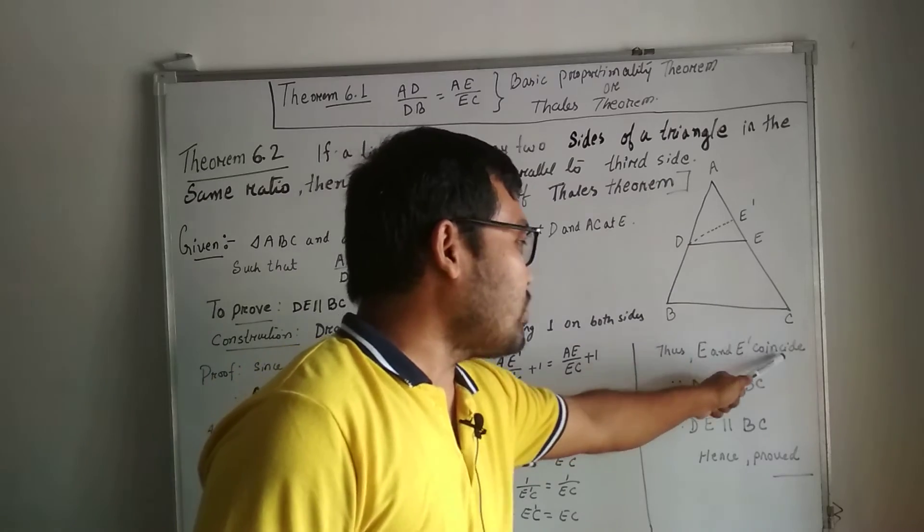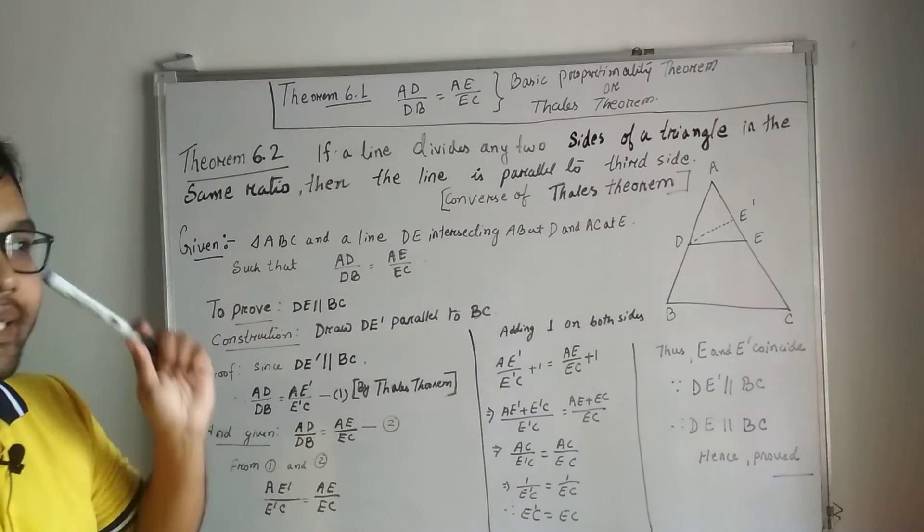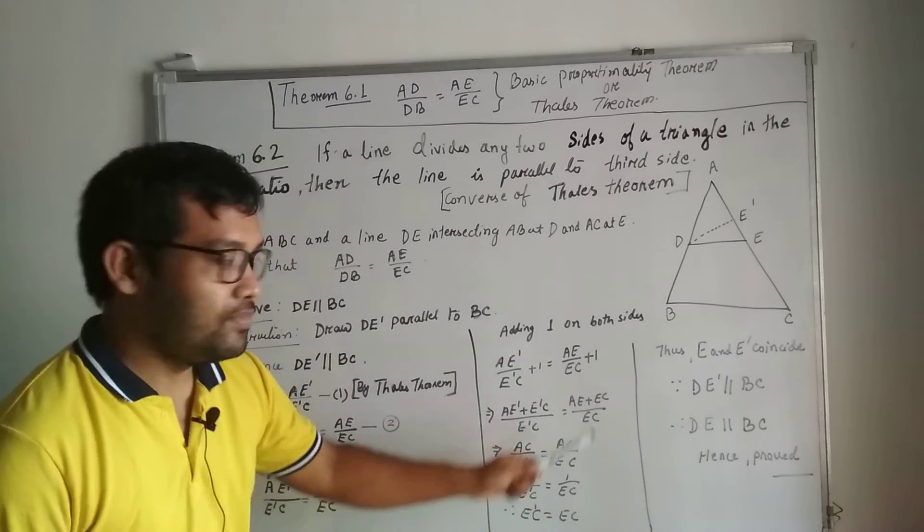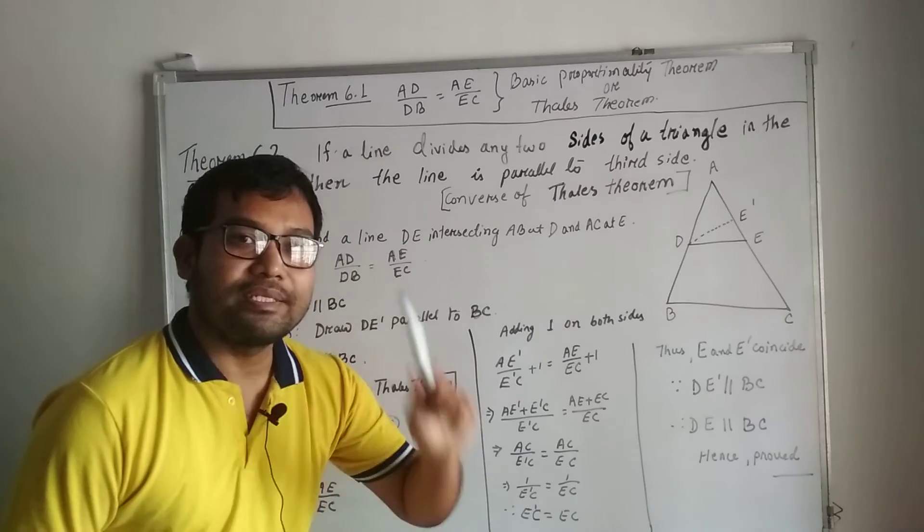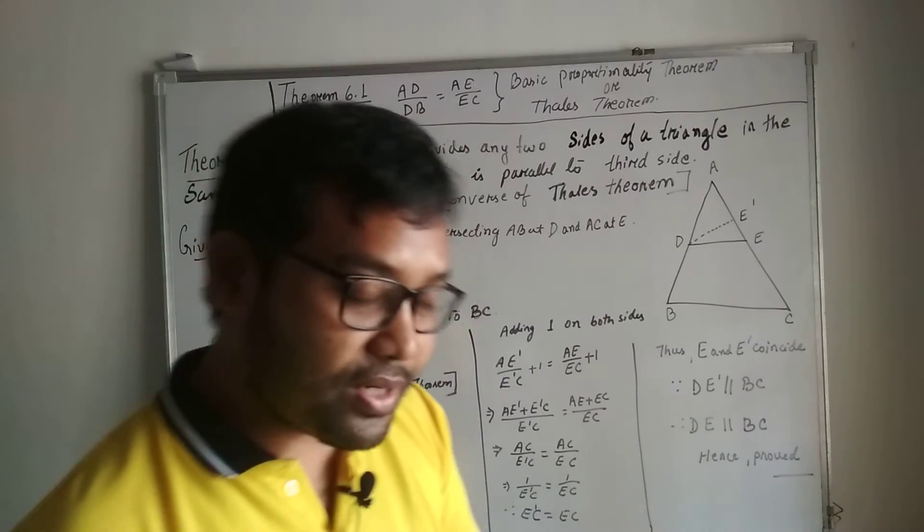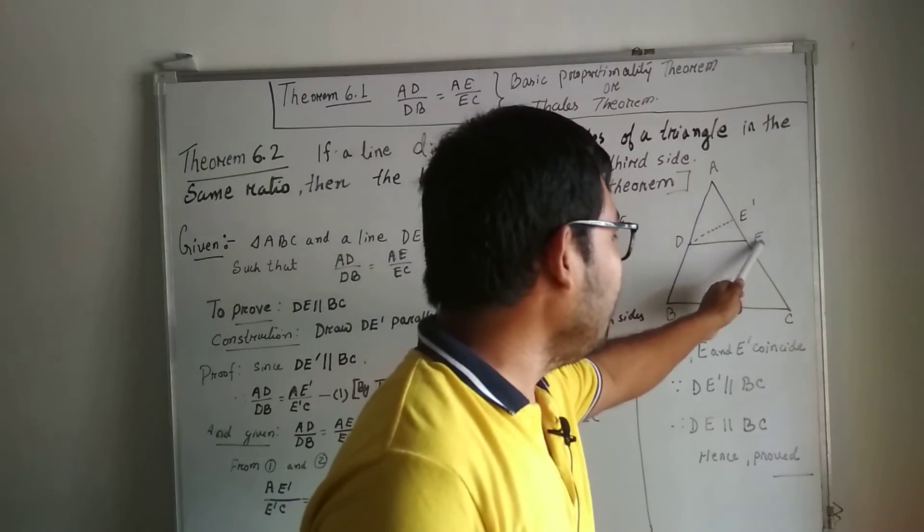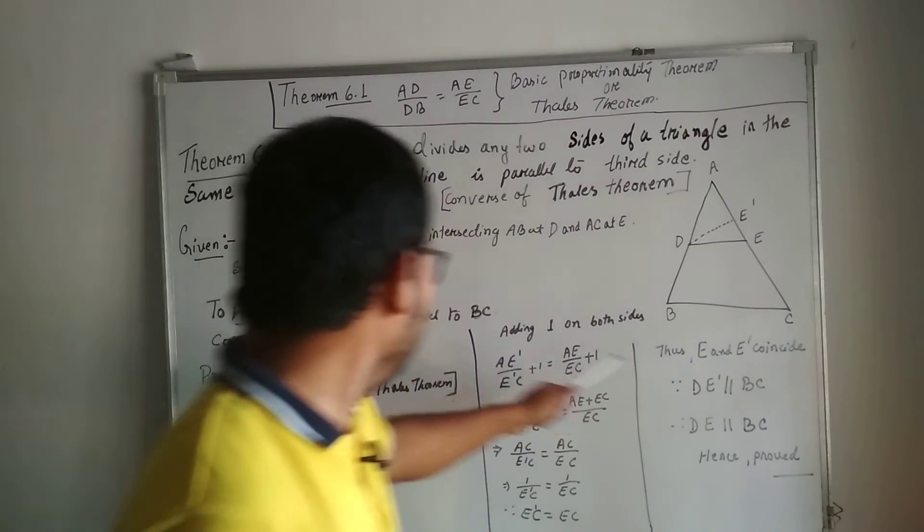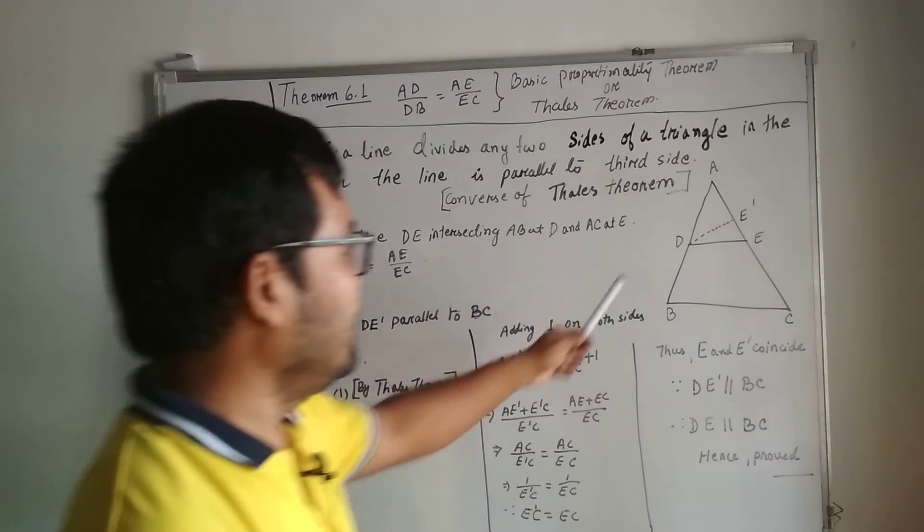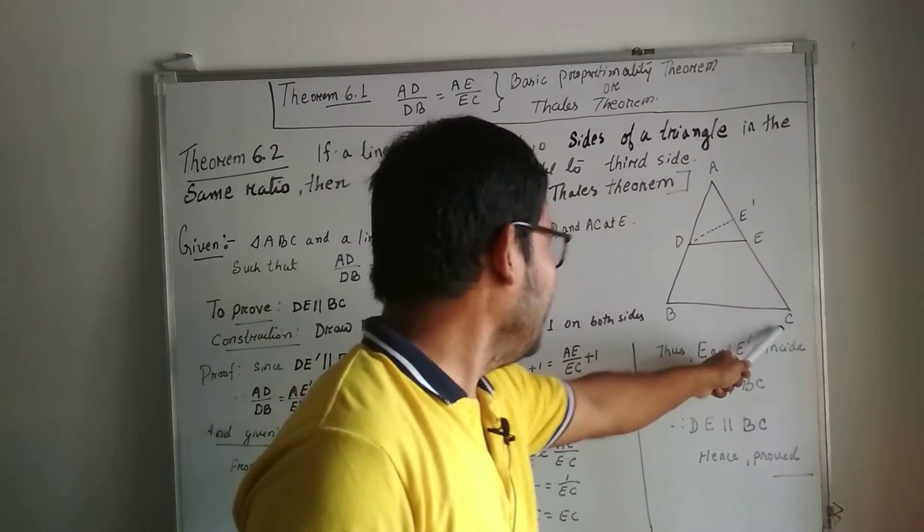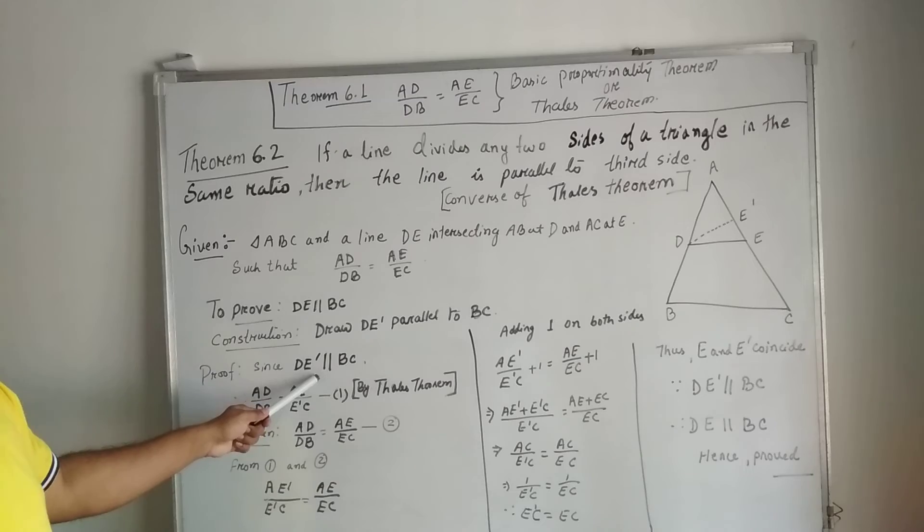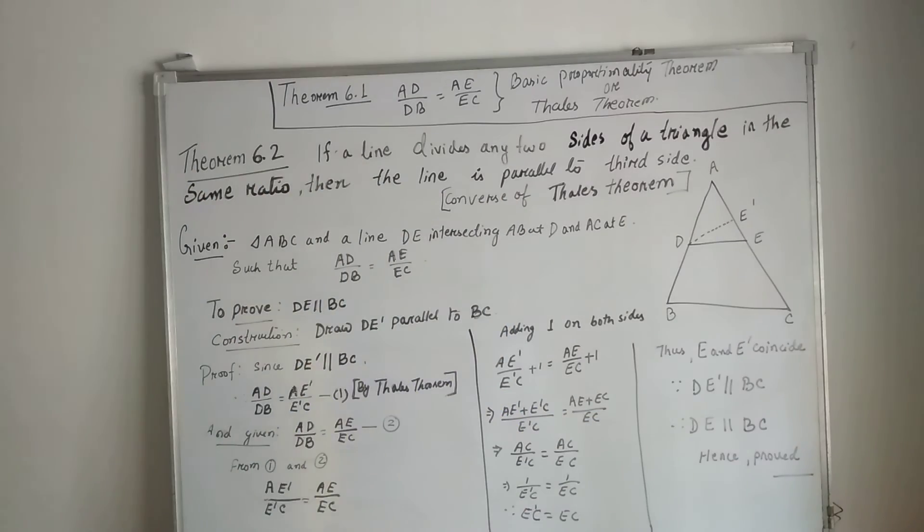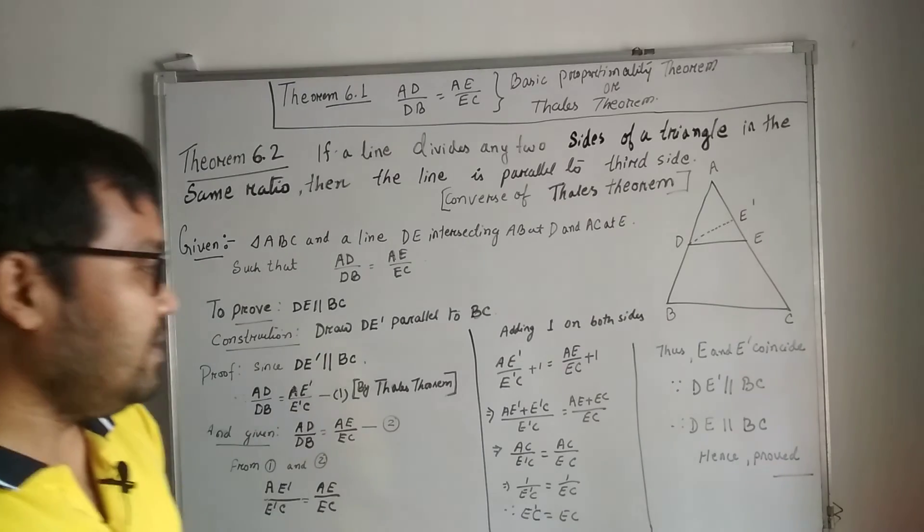That means E and E' coincide. The point E and E' are the same point. That's why these two line segments E'C and EC are the same, because E and E' are the same point. Therefore, DE is parallel to BC. Hence proved.